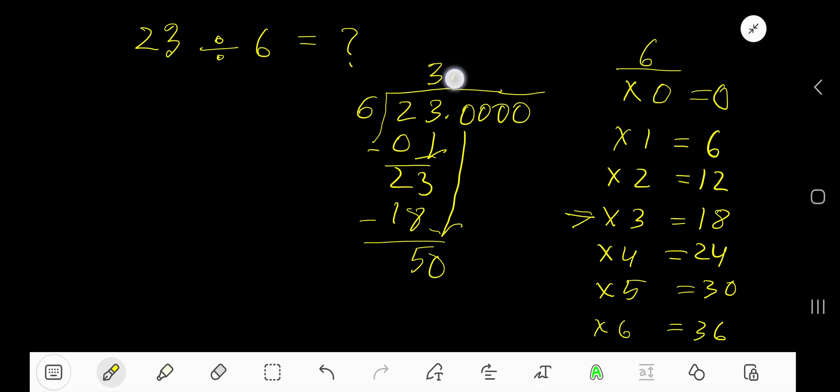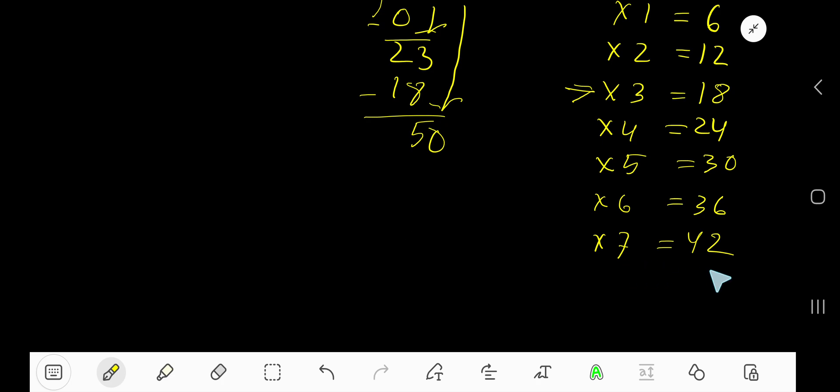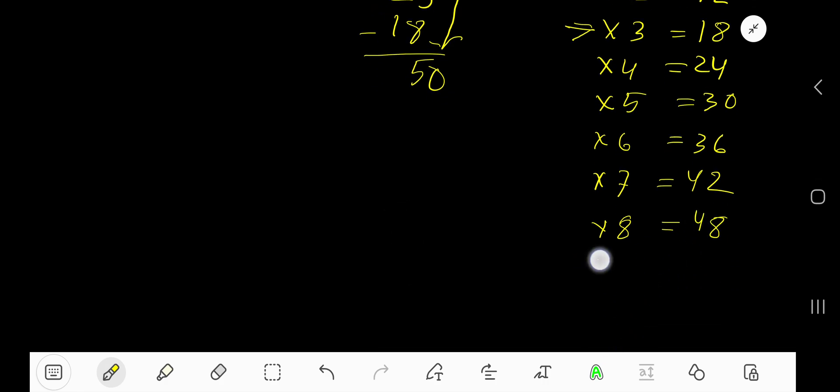6 goes into 50 how many times? Let's see, 6 times 7 is 42, 42 plus 6 is 48, 48 plus 6 is 54. So we have 50.